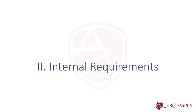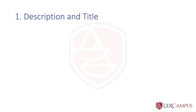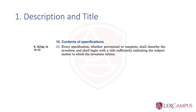When we look at Section 10, it talks about the internal requirements of a complete specification. Section 10.1 talks about description and title. Every specification, whether complete or provisional, shall describe the invention and shall begin with the title sufficiently indicating the subject matter. Description is a part of the specification, and title is also a part of the specification — so 10.1 discloses two parts of the specification.